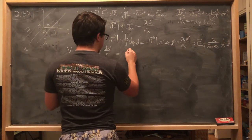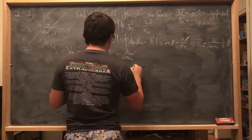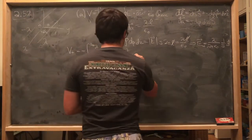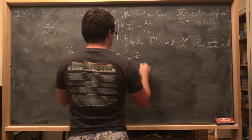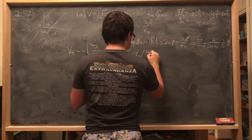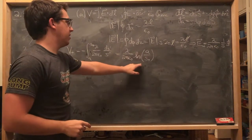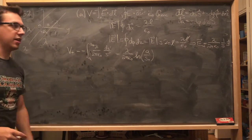And so then what is this? This is lambda over 2 pi epsilon naught. Integrating one over S is going to give us the natural log, and if we put this negative in here, then we could switch the limits of integration, and it would look like this, because it would be ln of a minus ln of S plus if we distribute that negative into it.